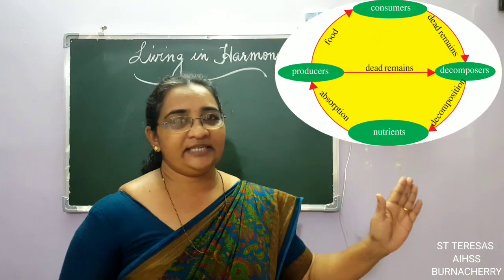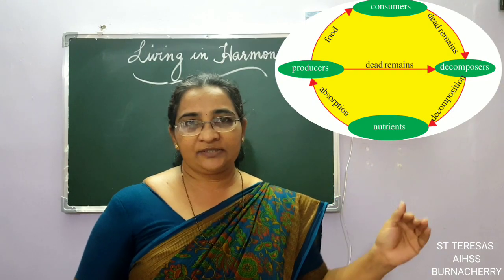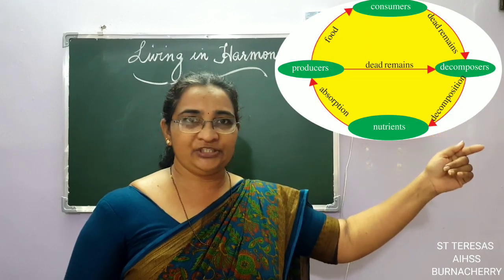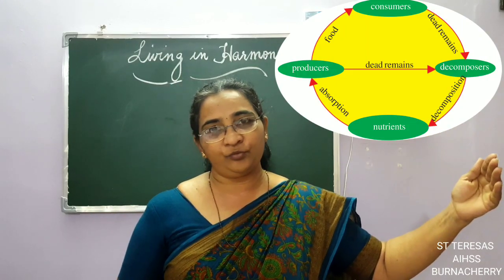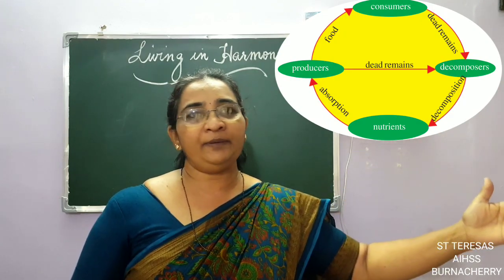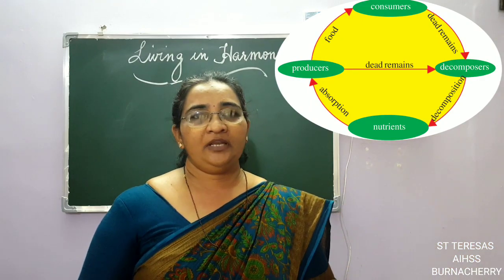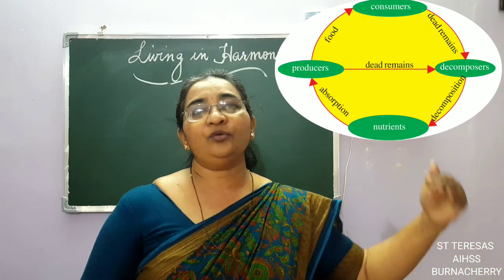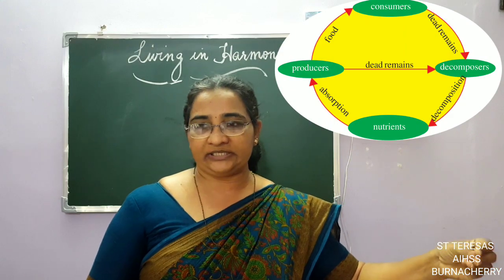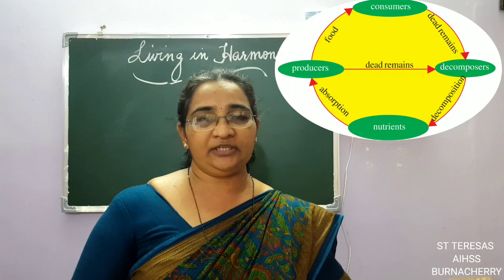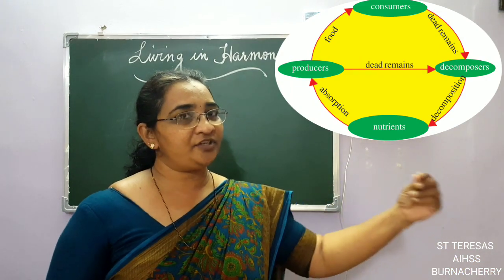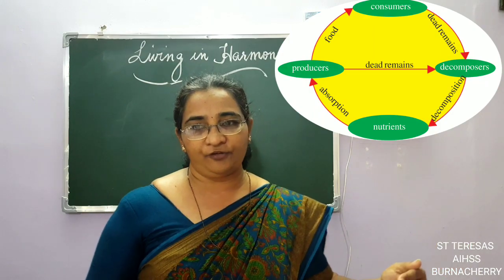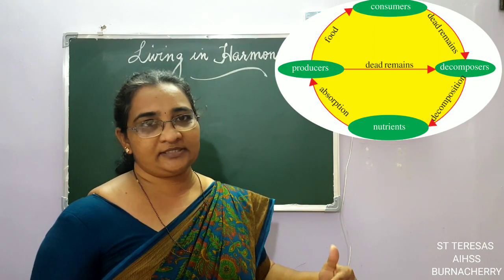It is a cycle. Look at this illustration in the textbook. The producers are the first level — they produce food for the consumers. After the consumers take the food, both the consumers and the producers eventually die. The dead remains fall into the ground, and the decomposers decompose them — this process is called decomposition. Decomposers act on the dead remains of both producers and consumers, nutrients are formed, and those nutrients are absorbed by the producers or plants.